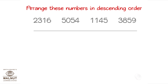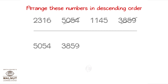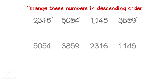You pick the biggest number and place it first, then the next biggest, and then the next one, then place the last one. So, we get the numbers in descending order.